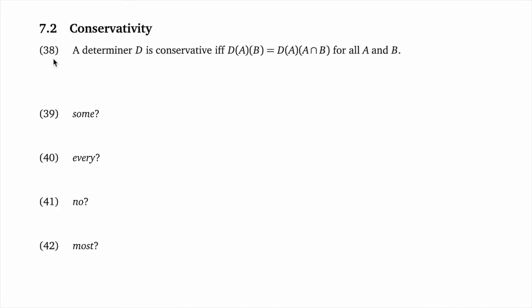Let's move now to conservativity. This one will play out differently from intersectivity because we actually have a proposed universal of language — that all lexical determiners in all languages are conservative. Conservativity is a little more abstract, but we can get our heads around it. The formal definition is given in 38: we say that a determiner D is conservative if and only if D-A-B equals D-A-(A intersect B). In other words, we can change the scope argument B to the intersection of B with the restriction argument A without changing the truth conditions at all.